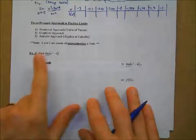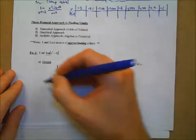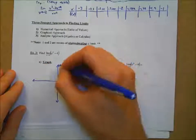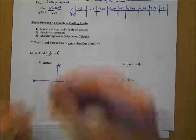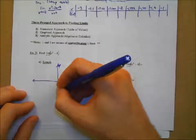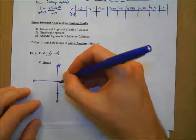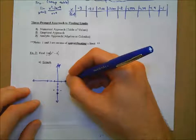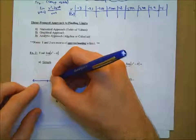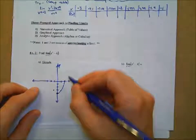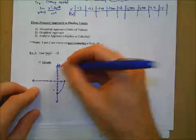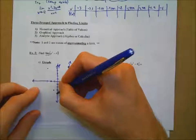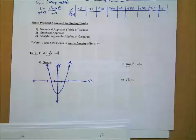Now let's graph x² - 4. We don't need a calculator for this. Our parent function is x², shifted down 4 units. The new vertex is at (0, -4). At x = 2, it's 4 - 4 = 0; at x = -2, it's also 0. At x = 3, it's 9 - 4 = 5. By symmetry, at x = -3 it's also 5. There's our sketch.